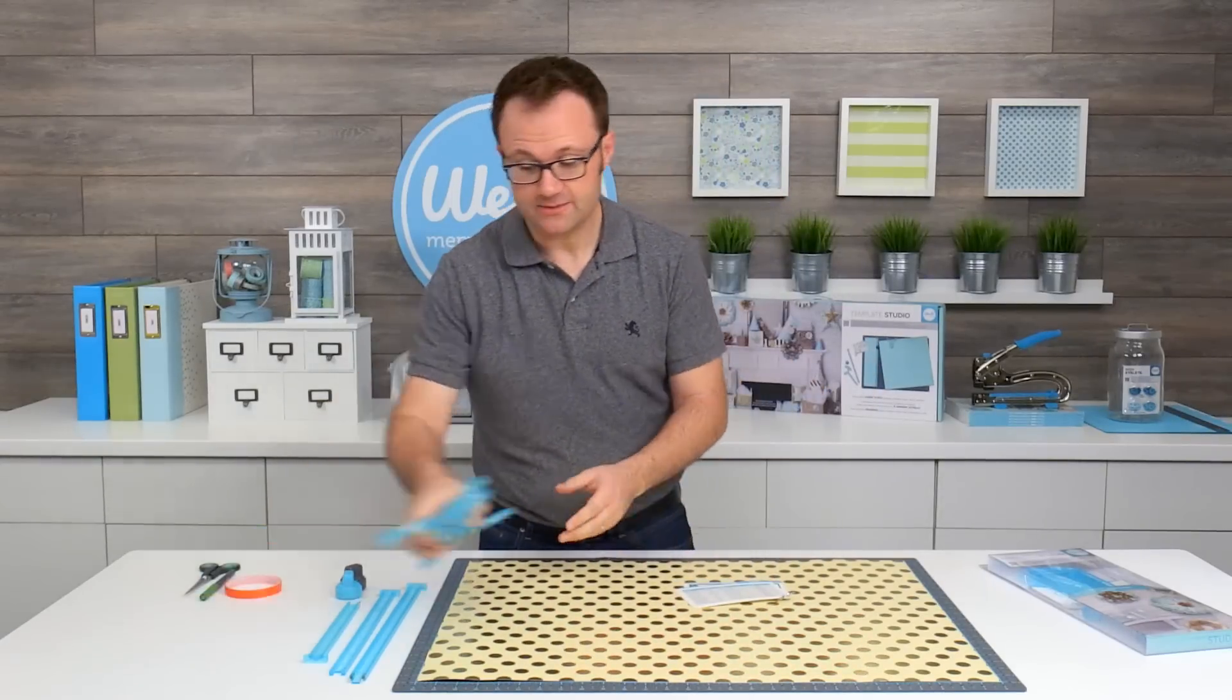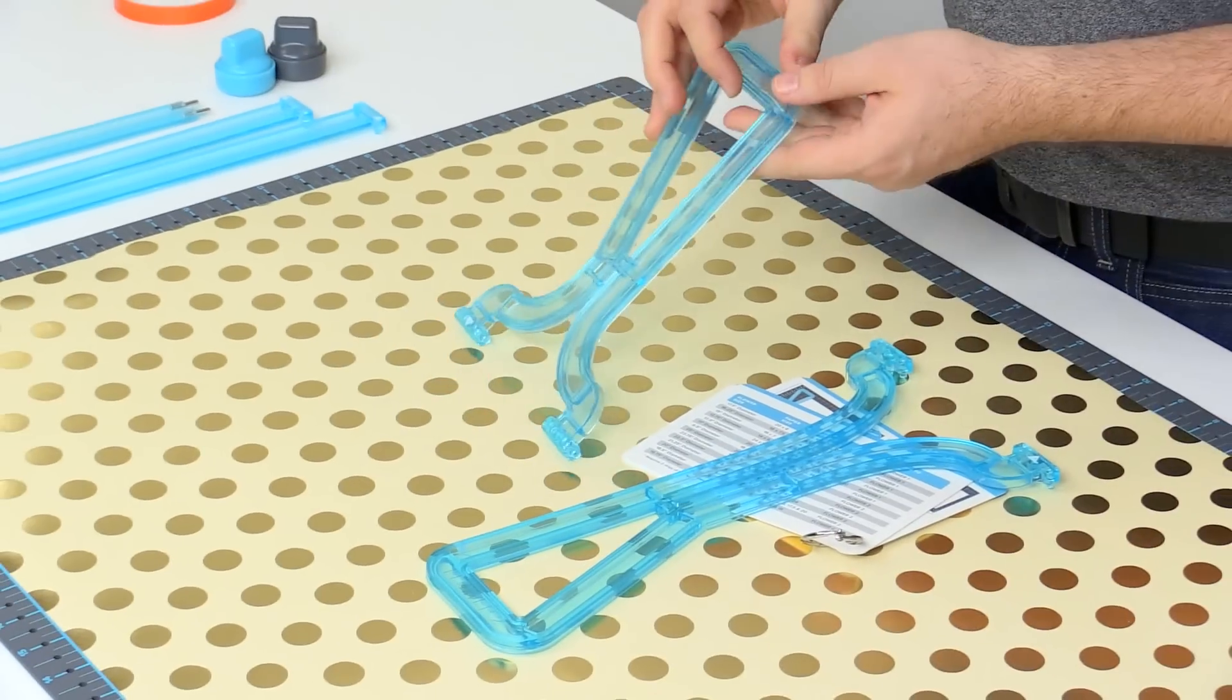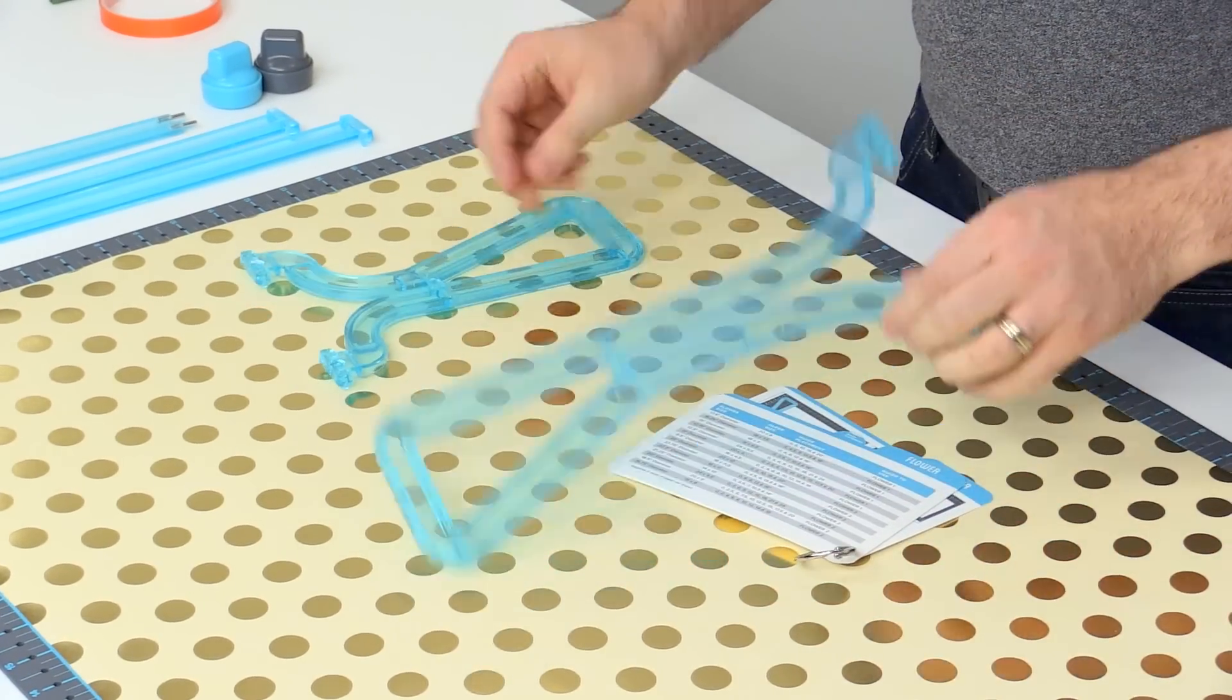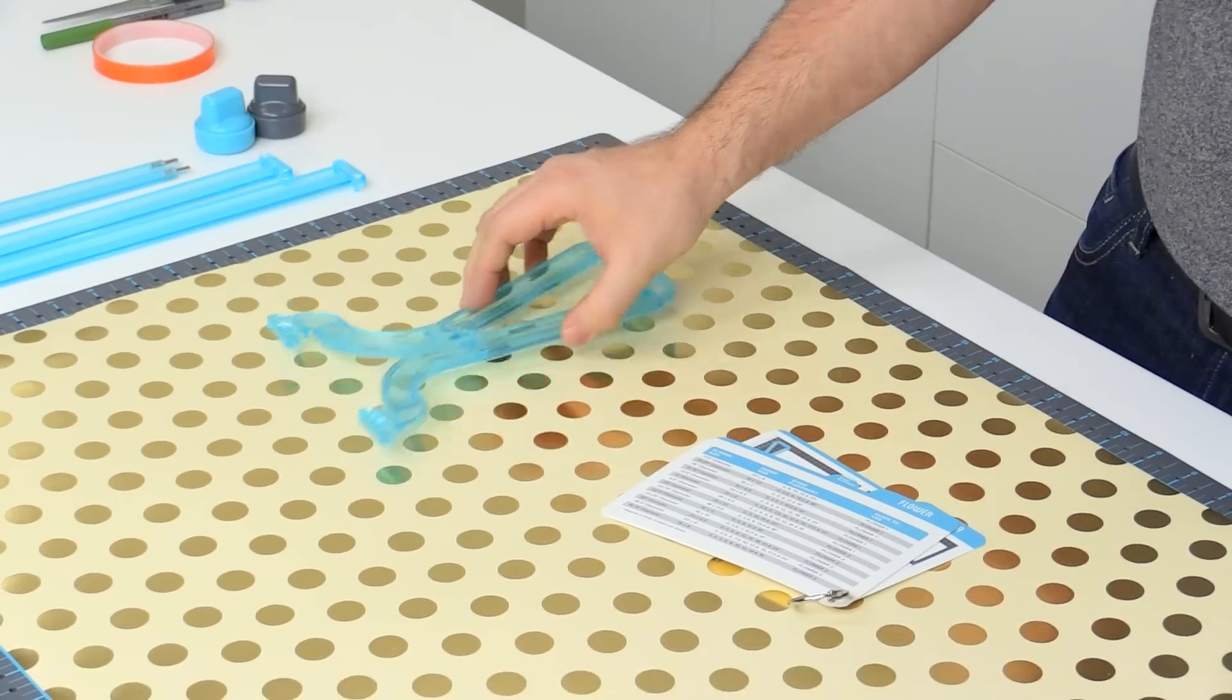Now your flower kit comes with two different Template Guides. Flower number one is a shorter petal flower. Flower number two has a longer petal, similar to a daisy. I'm going to be using flower number two.